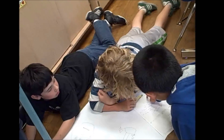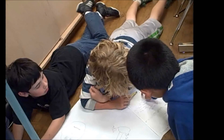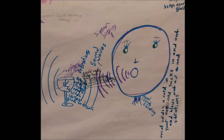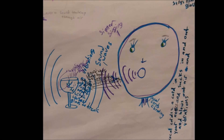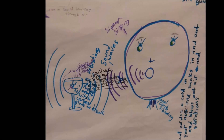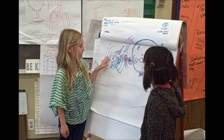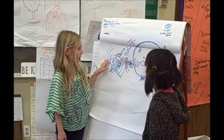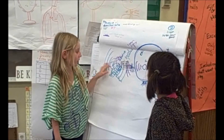Finally, students worked in small groups to make a consensus model that would explain how the singer was able to shatter the glass using evidence to support their ideas. Students had resources to help them in this process by using their initial model and midpoint model, as well as access to readings and diagrams used in class.